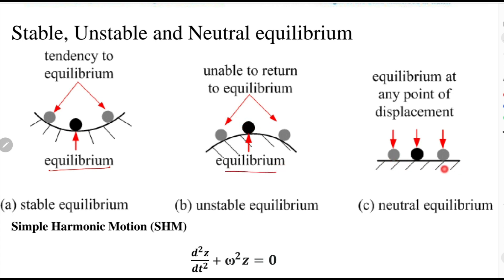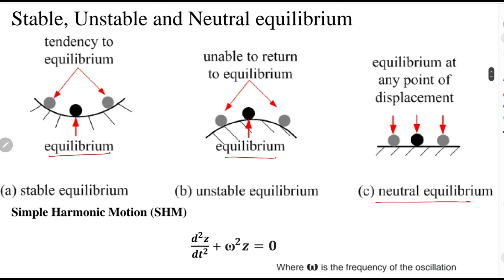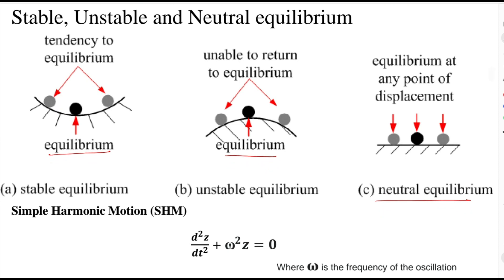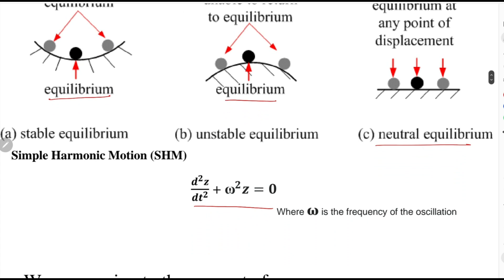This is the neutral equilibrium condition, named because the ball is stable at any location on the plane. From these three conditions, we can see that a ball only tends to return to its original position when it is in stable equilibrium. When it returns to its initial position, it will overshoot in the opposite direction and oscillate about the mean position. This oscillation is known as simple harmonic motion. This is the general equation of simple harmonic motion, where Z is the displacement and omega is the frequency of oscillation.